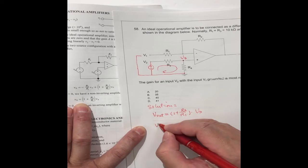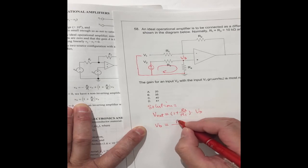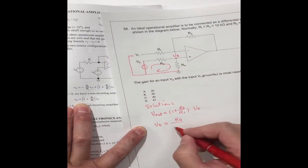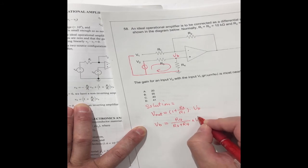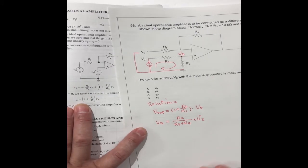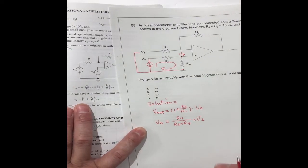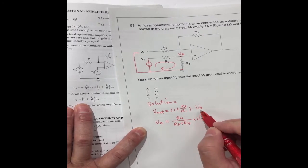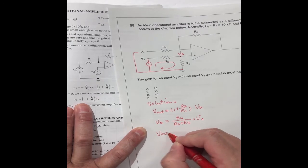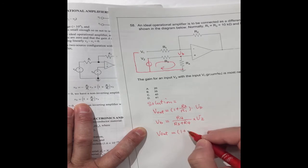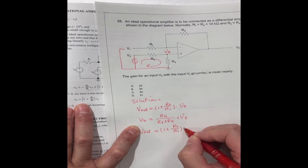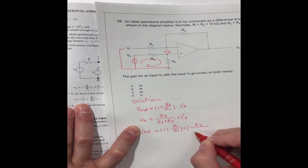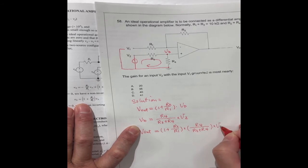We can get the formula like this. VB should be R4 divided by R3 plus R4 times V2. So V output equals 1 plus R2 divided by R1 times R4 divided by R3 plus R4 times V2.